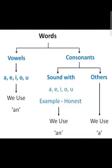So children, indefinite articles A and AN will be used before vowels and consonants. How many vowels are there in English? Five: A, E, I, O, U. So before vowels we will use AN, and before consonants we will use A.